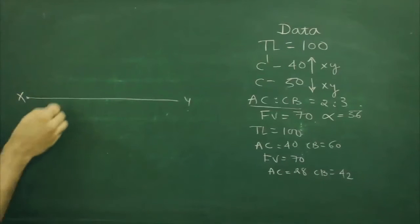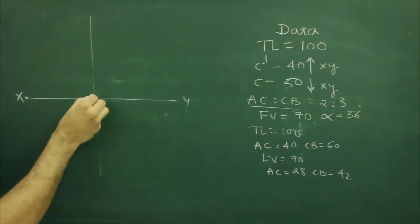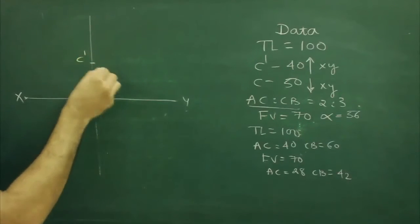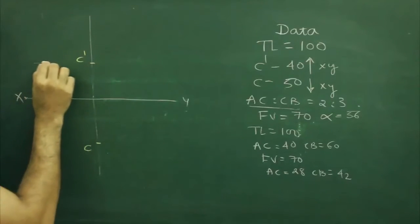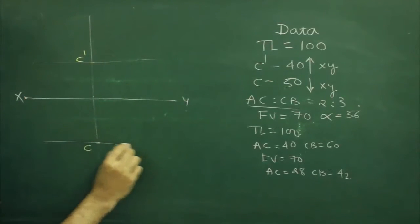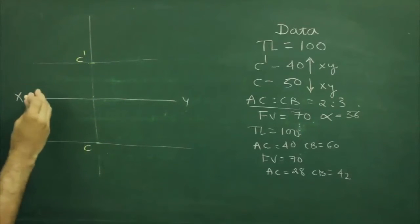First you draw xy line and you draw C dash and C. C dash is 40 mm above xy line and C is 50 below xy line. We keep point C as a fixed point. Now remember we will keep this point C as a fixed point and we will deal with only C to B.